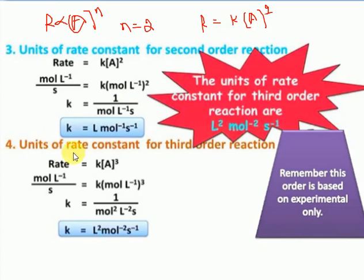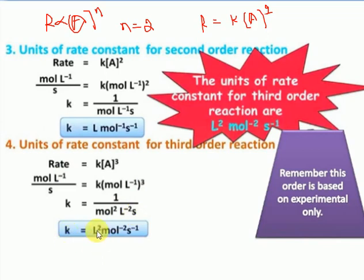For the third-order reaction, rate equals K times A to the power of 3. Concentration is moles per litre, so A cubed is moles per litre cubed. After cancellation, K equals litre squared, mole to the power of minus 2, second inverse. These are the units for the rate constant for zero-order, first-order, second-order, and third-order reactions.